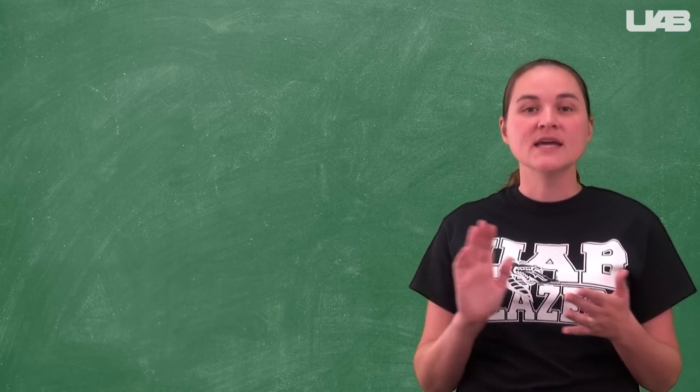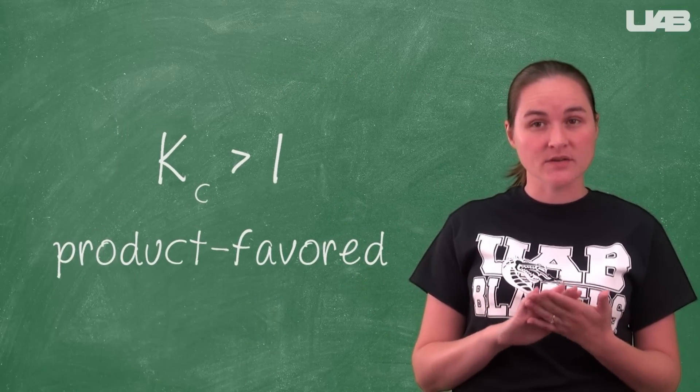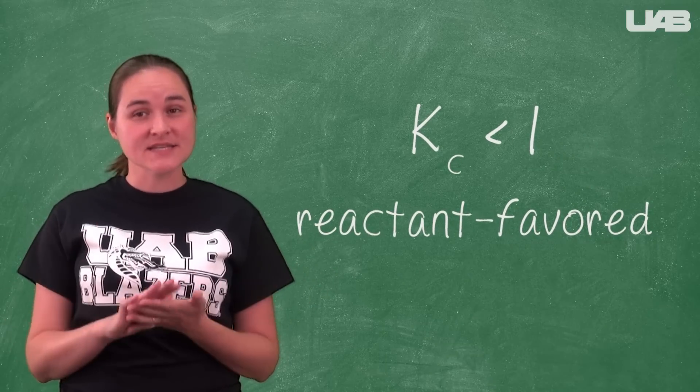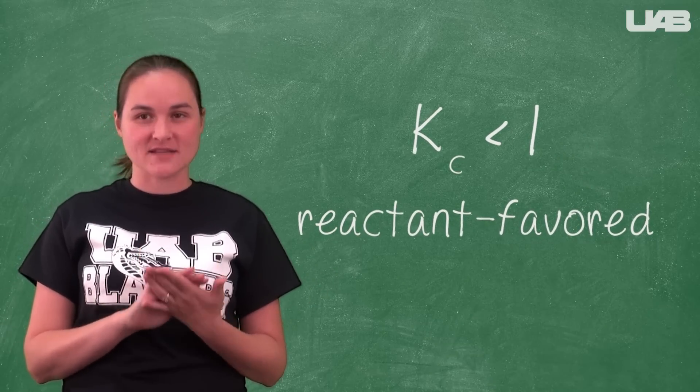As a general rule, if the equilibrium constant is greater than 1, that means that the reaction is product favored. If the equilibrium constant is less than 1, the reaction is reactant favored.